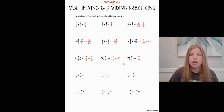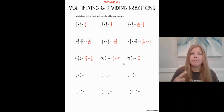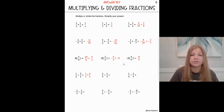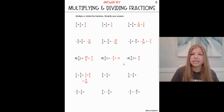So this problem: one half divided by five fourths. I would rewrite that as one half — the first fraction — multiplied by the reciprocal of five fourths. The reciprocal of five fourths is four fifths. So now that problem looks like one half times four fifths. I multiply straight across: one times four is four, two times five is ten. Can we simplify four tenths? Absolutely — and we would get two fifths.